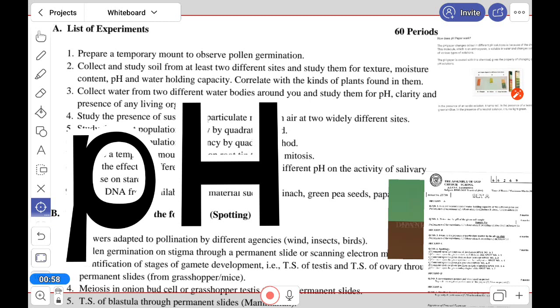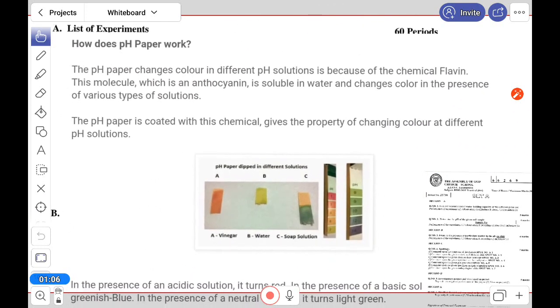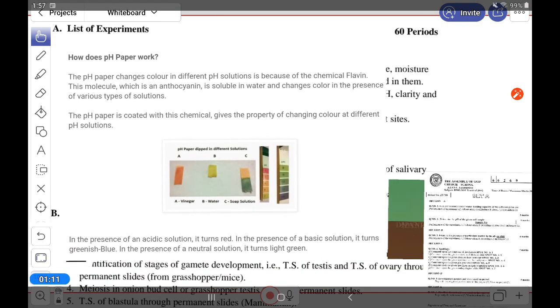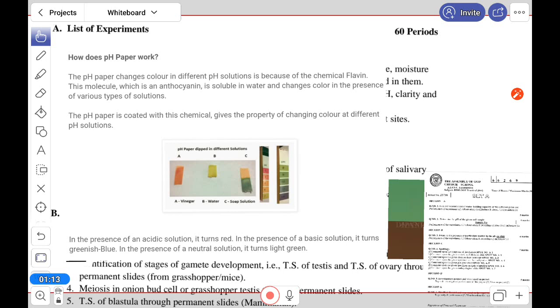Here we will use pH paper. Let me show you how this paper works. The pH paper changes color in different pH solutions. This type of paper strip has different color shades and the pH value ranges written over it. I think you have used this type of paper.